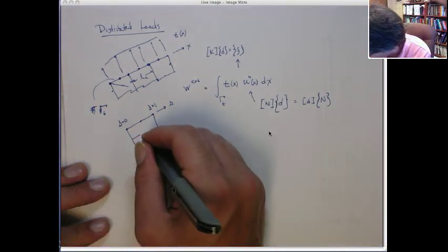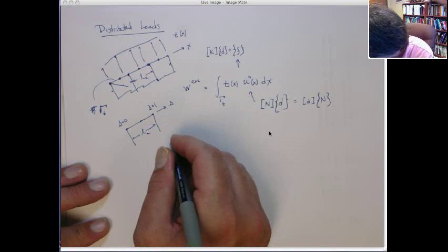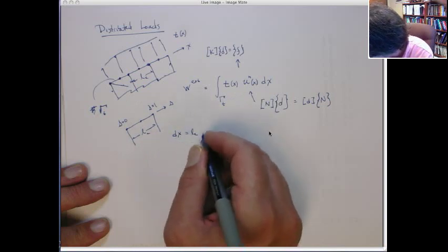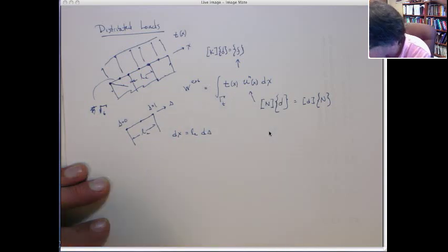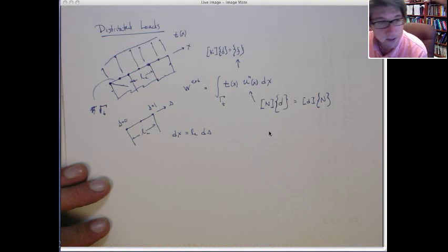So if this is the length of the edge LE, I can write dx is basically length of the edge dS, right? We change S by 1, multiply the length, that gives us the change in X.